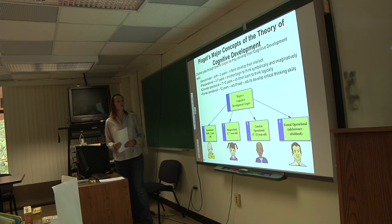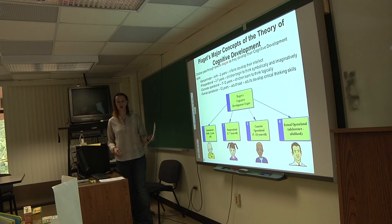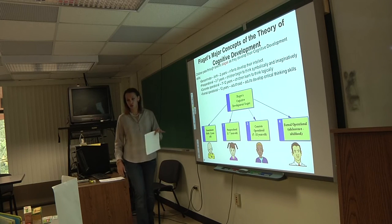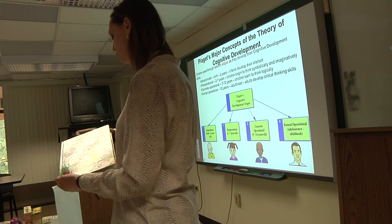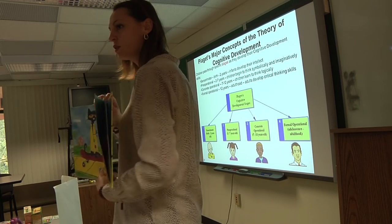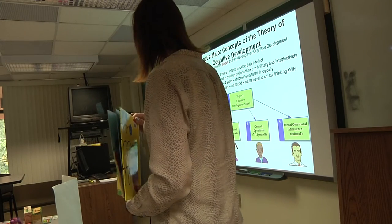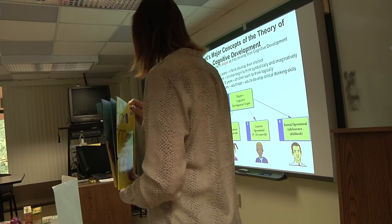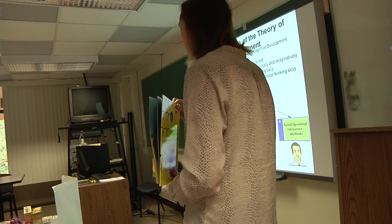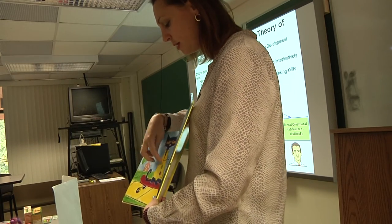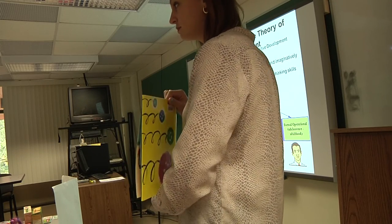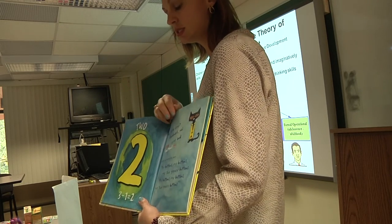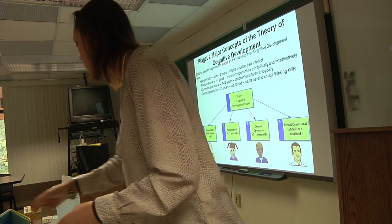Now for the stage-matching game: we have the four stages — sensory motor, pre-operational, concrete operational, and formal operational. First activity: reading 'Pete the Cat and His Four Groovy Buttons.' What stage is this? Pre-operational — two to seven years old. Children in this stage begin to think symbolically and imaginatively. Reading about buttons popping off is also somewhat a conservation task — what is left and how many — placing it in the two-to-seven-year-old stage.